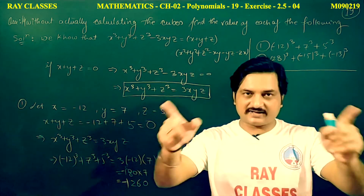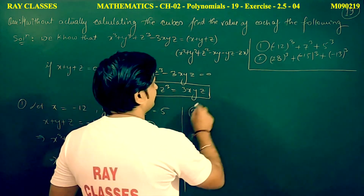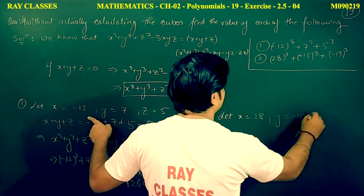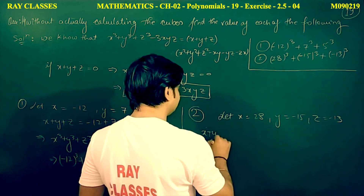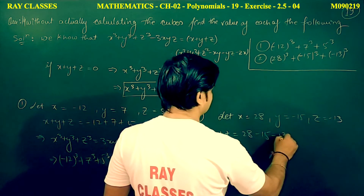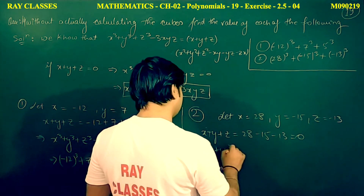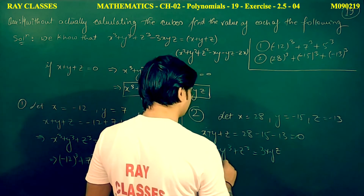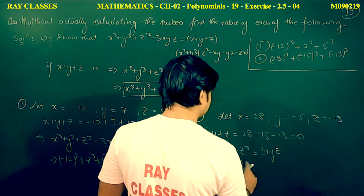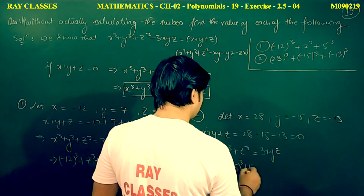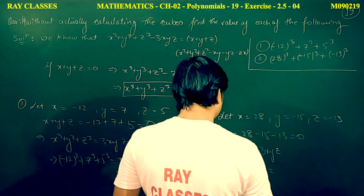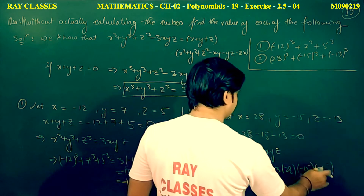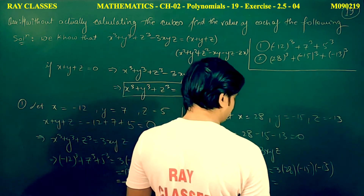Now the second part: x equals 28, y equals minus 15, and z equals minus 13. So x plus y plus z equals 28 minus 15 minus 13 equals 0. Therefore x cubed plus y cubed plus z cubed equals 3xyz.